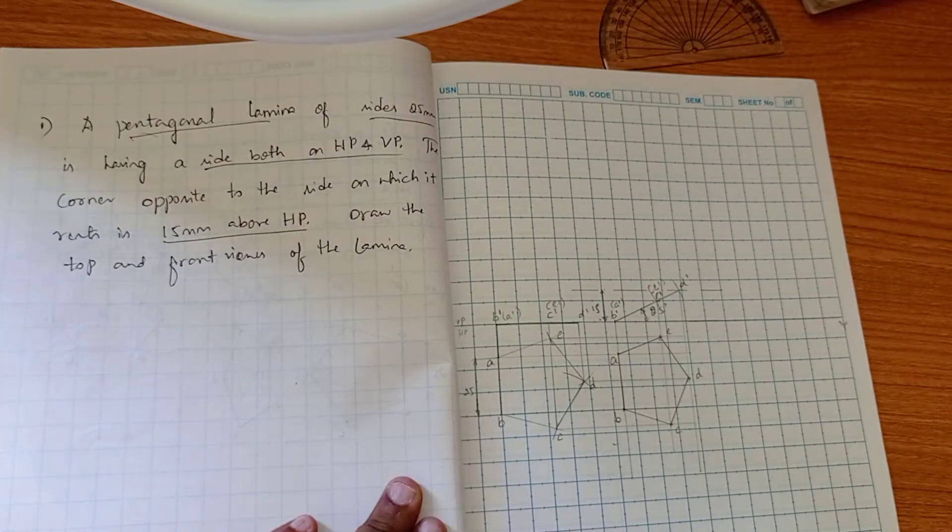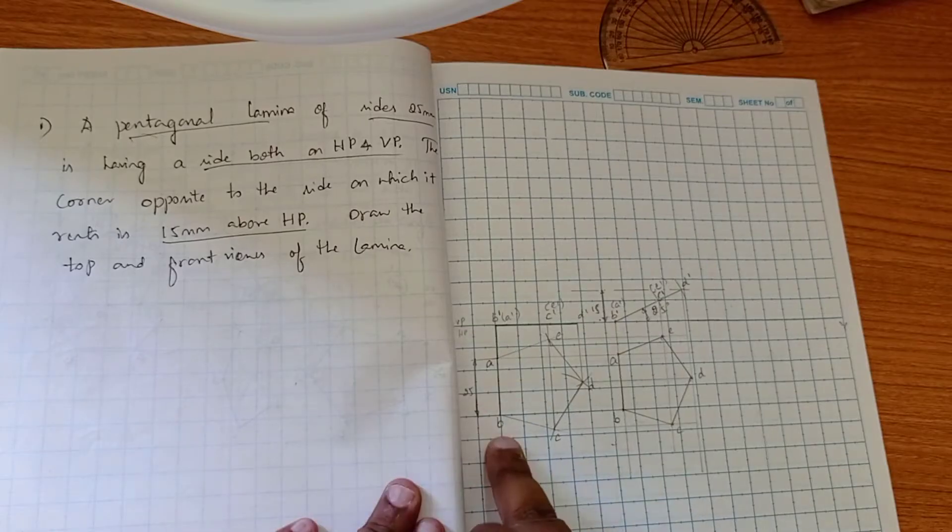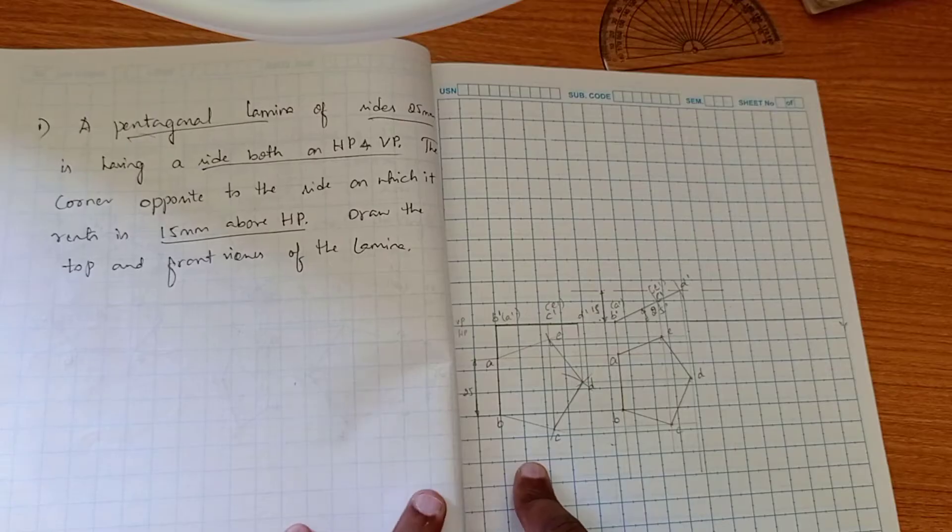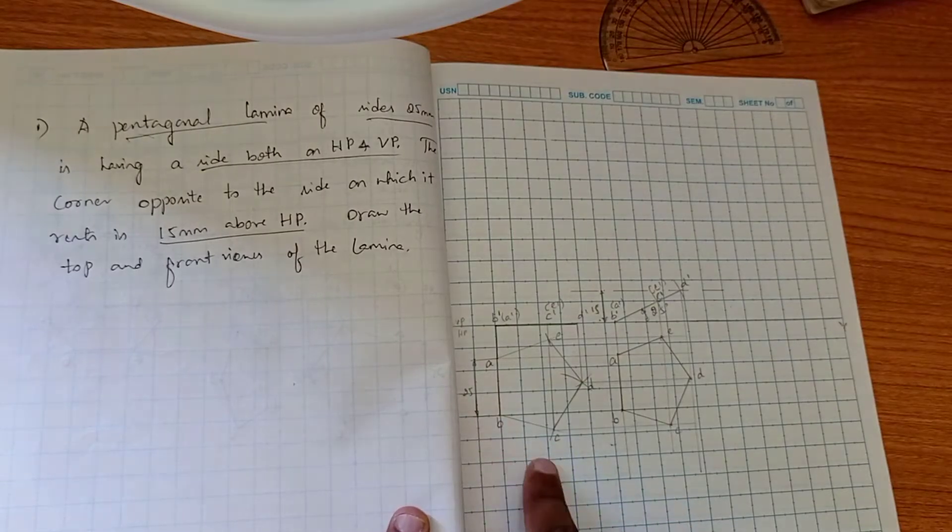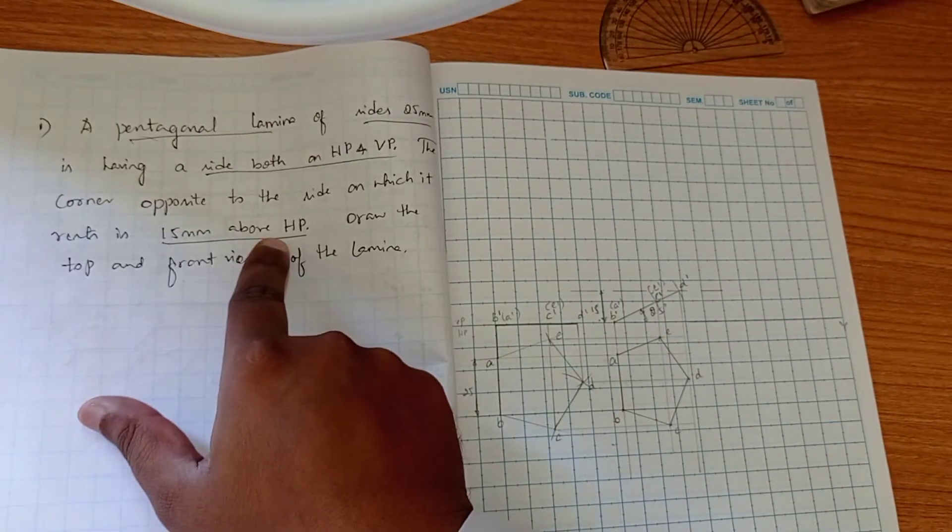In this question they are mentioning we have to make sure that one of the edges has to be there in the HP plane and one of the edges has to be there in the VP plane. With respect to the condition, I have drawn the edge AB resting on the HP plane, and the second angle of inclination is there with respect to 15 mm above HP.